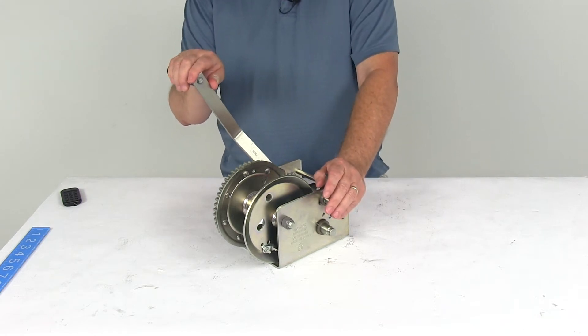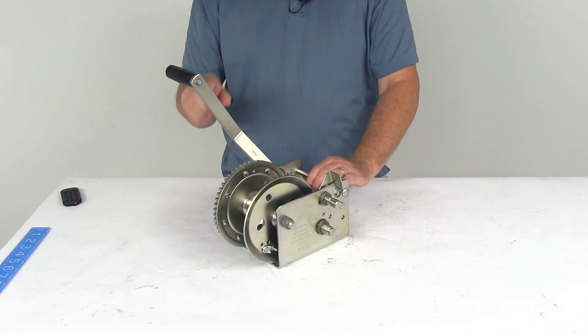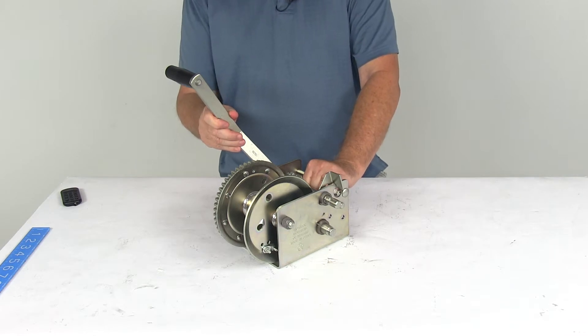Take a look at the Fulton high-performance two-speed trailer winch. It's for cable only and has a 3,200-pound weight capacity.